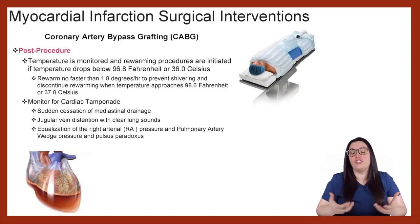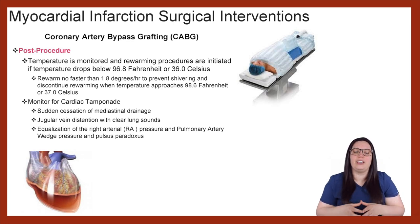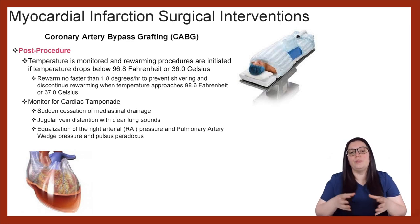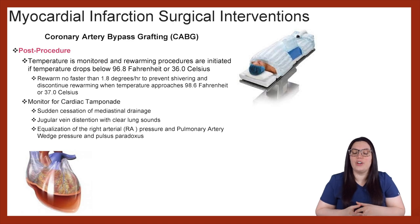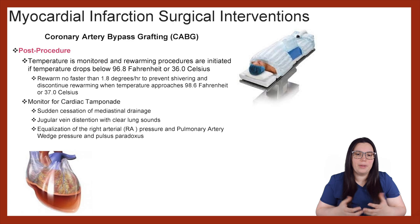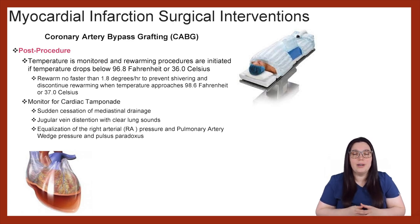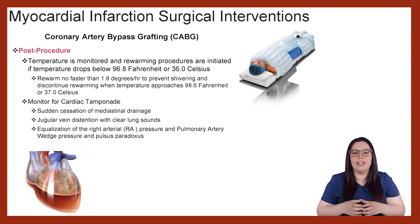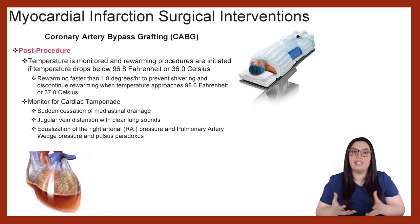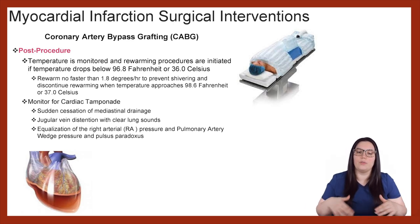Additional post-procedural interventions include temperature monitoring and re-warming the patient if their temperature drops below 96.8 degrees Fahrenheit or 36 degrees Celsius. When re-warming the patient, you really don't want to do it faster than 1.8 degrees per hour because we want to prevent shivering from occurring. Once the patient reaches 98.6 degrees Fahrenheit or 37 degrees Celsius, we want to discontinue the re-warming.